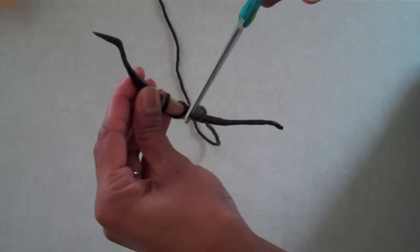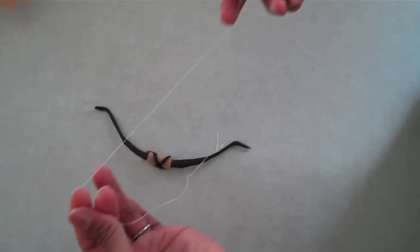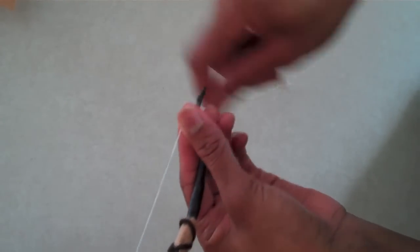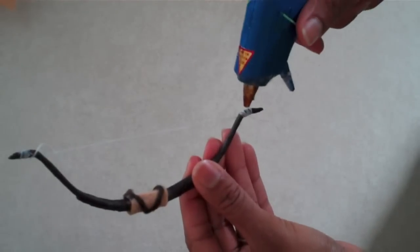Trim off the excess, take a piece of dental floss, wrap it around the top, stretch it to the bottom, and wrap it there as well, and secure with glue.